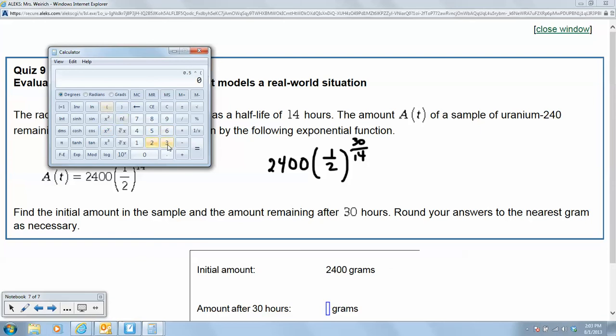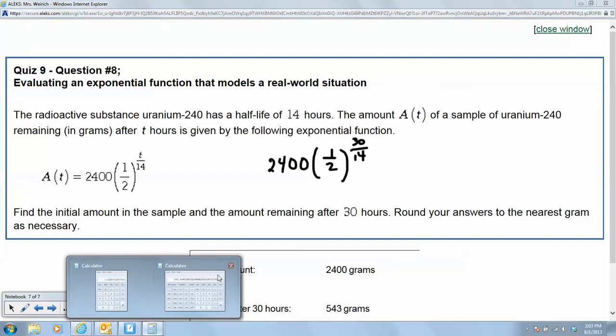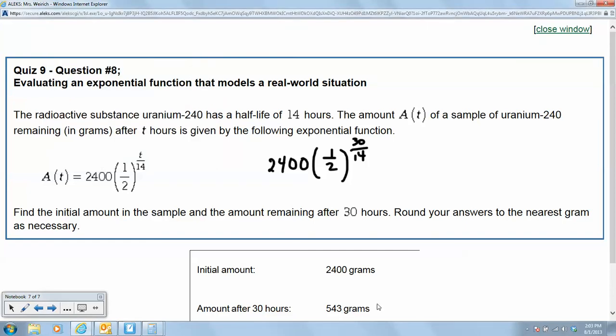Let's see, 30 over 14, in that parenthesis, press equals, and then multiply by 2400. This is what the Alex calculator should give you as well. So it's 543 to the nearest gram because it would round down. 543 grams.